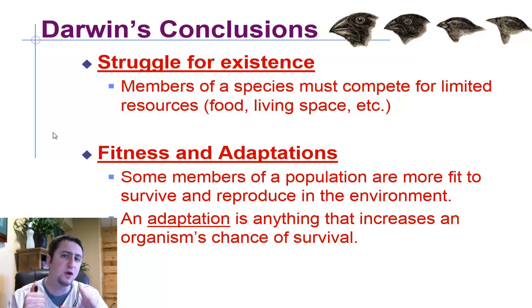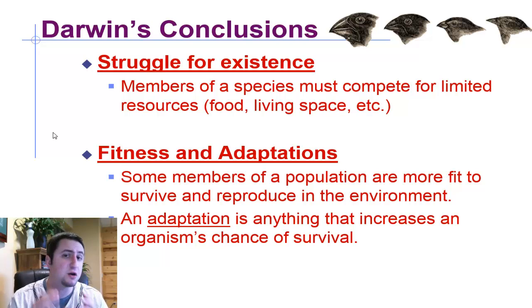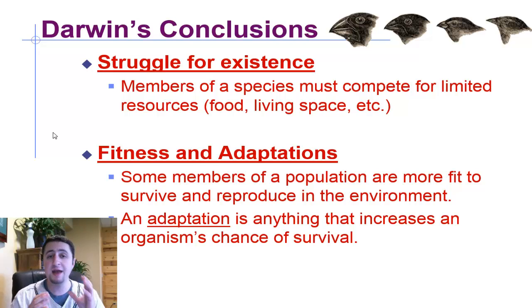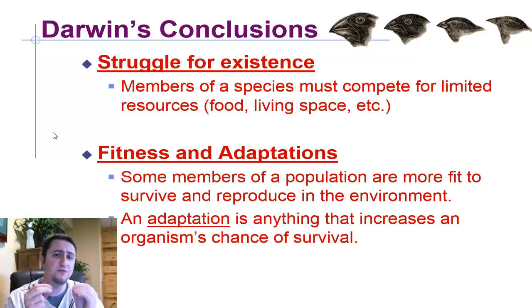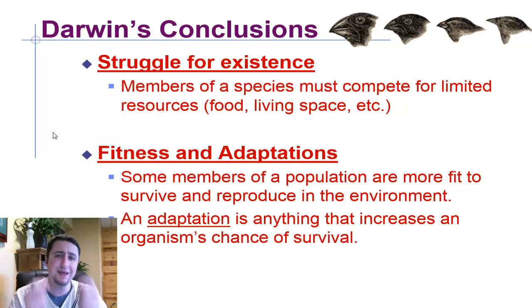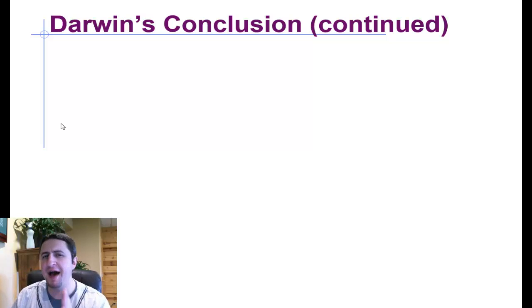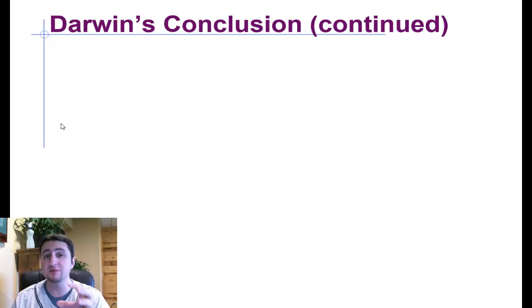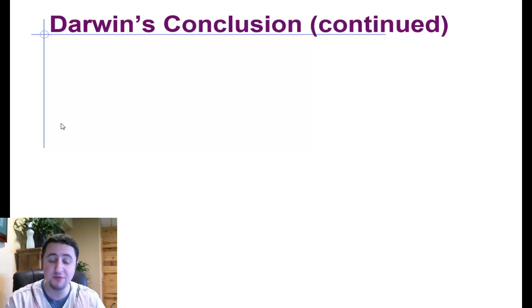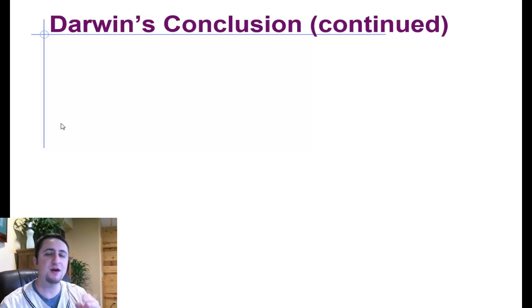To put it another way, some of those different individuals of a species — some of those birds, for example — it was easier for them to survive. Thus, they are more fit. So they had certain adaptations, and an adaptation is anything that increases an organism's chance of survival. Those individual finches had the certain adaptations which allowed it to be easier for them to survive. So because they survived, they had a higher chance of reproducing. And because they reproduced, the next generation of organisms is going to be more likely to resemble those individuals that survived.